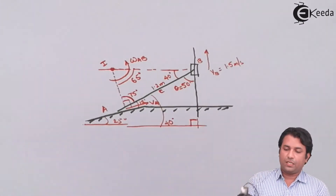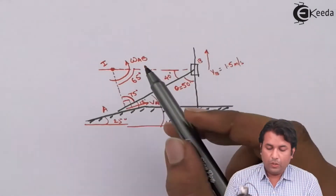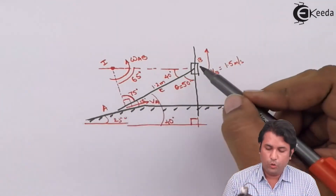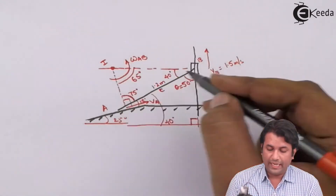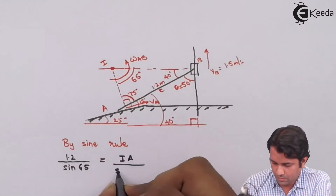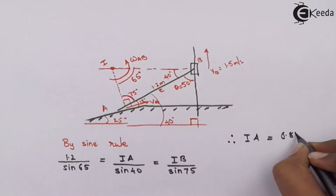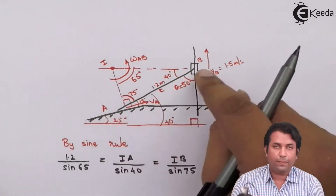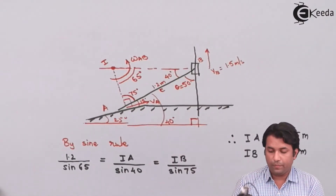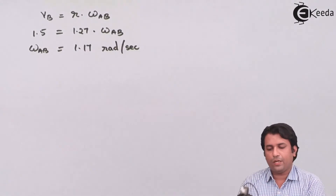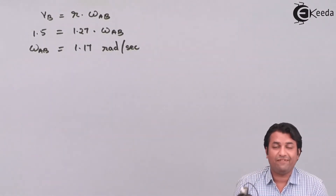The third angle of the triangle is therefore 180 minus 75 minus 40, which equals 65 degrees. I know the rod AB has a length of 1.2 meters, so by using the sine rule I can find the lengths IA and IB. Using the relation v equals r times omega, the angular velocity of rod AB comes out as 1.17 radians per second.